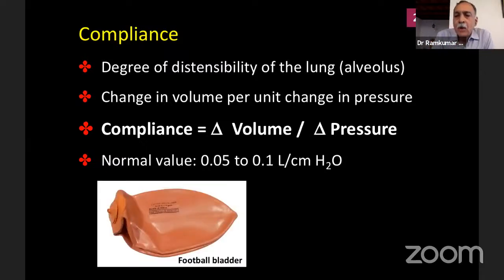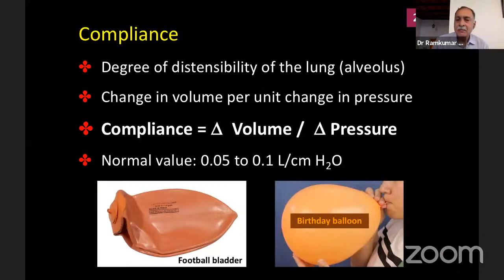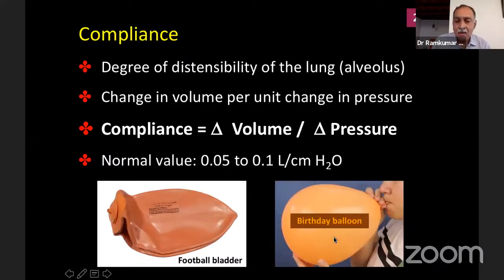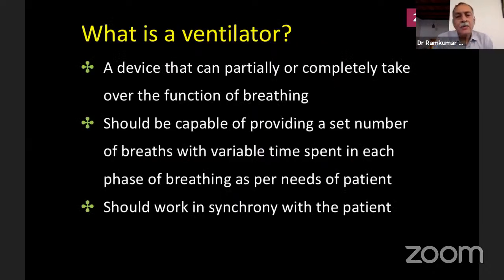Imagine trying to blow air into a football bladder — a very thick bladder — versus a birthday balloon. The birthday balloon is much more compliant. The football bladder is an exaggeration of what happens to the lungs of an individual affected with COVID-19, whereas a normal lung would be like a birthday balloon. As compliance decreases, a larger pressure difference is required to produce the same degree of volume change. Elastance is just the reciprocal of compliance — one divided by compliance equals elastance.